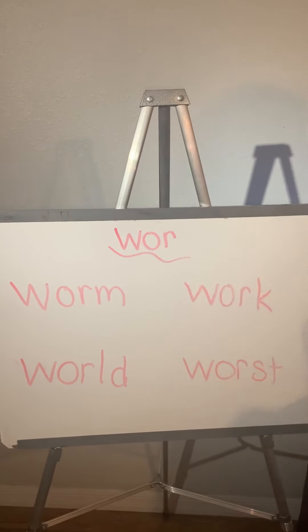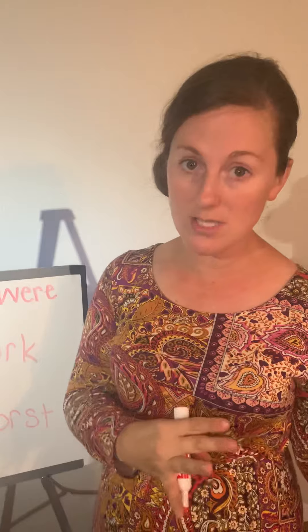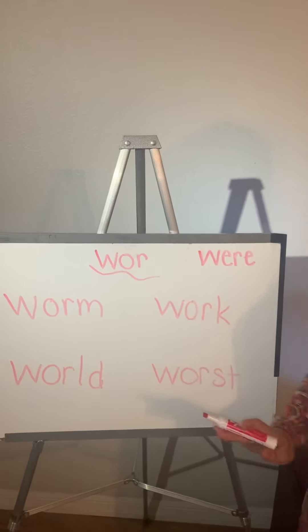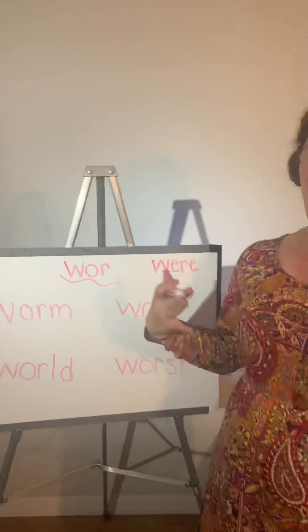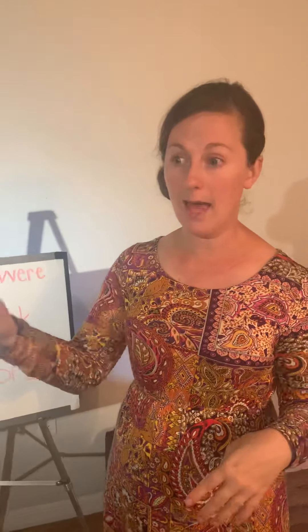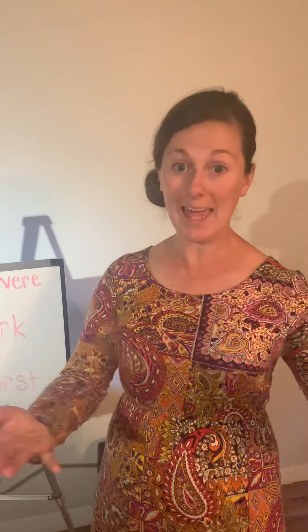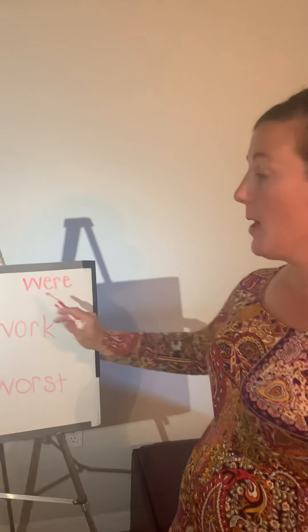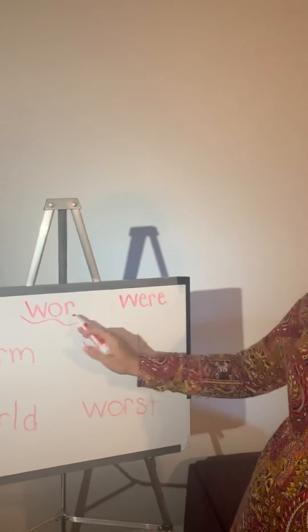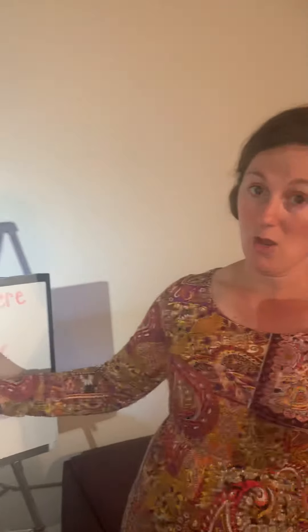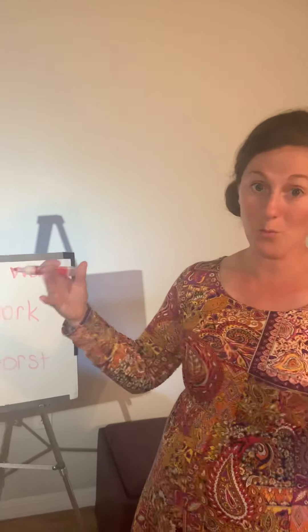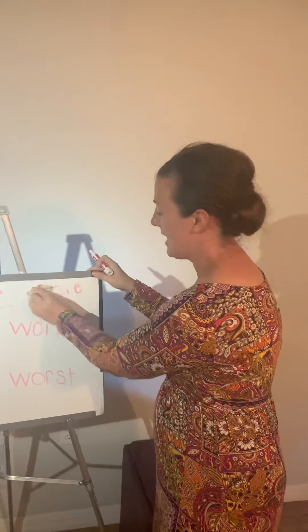We've learned that sometimes a sight word can be the same sound as a special sound. And that's the case here. This is the sight word were, but there's also the sound were. Kind of like R is a letter, R is a sight word, and R is a sound — well, were is a sight word, but it's also a sound. But they're spelled differently, aren't they? W-E-R-E is the sight word were. So, we're going to take that off.